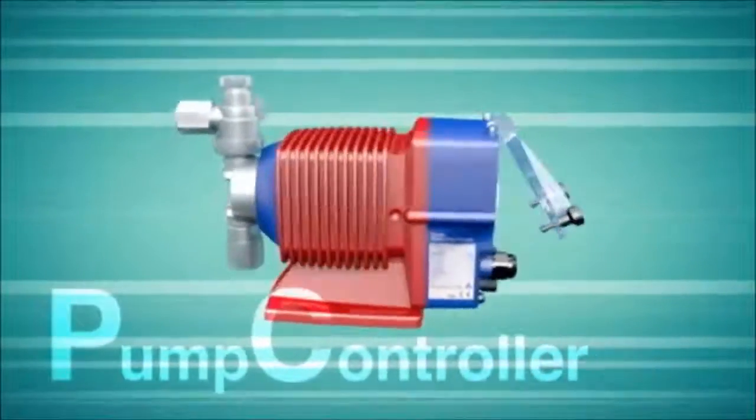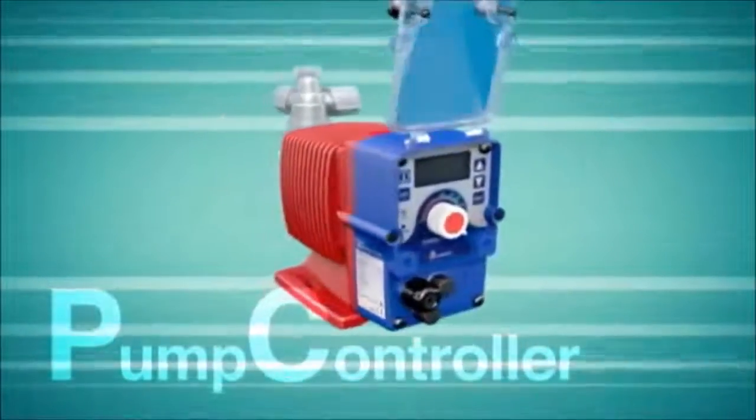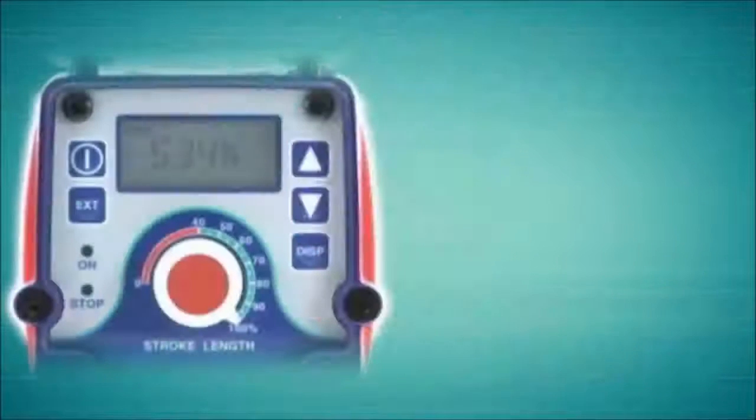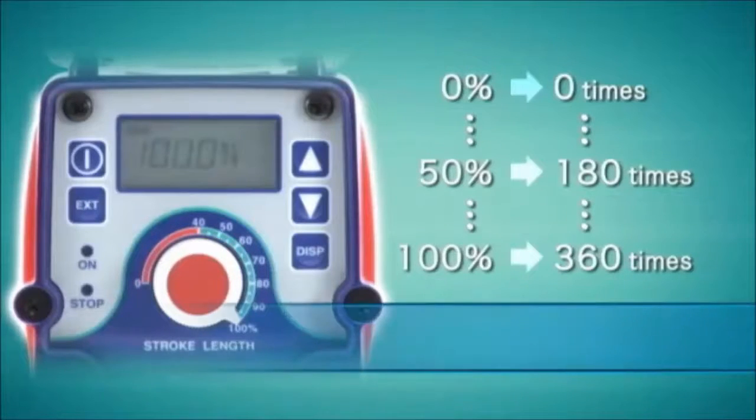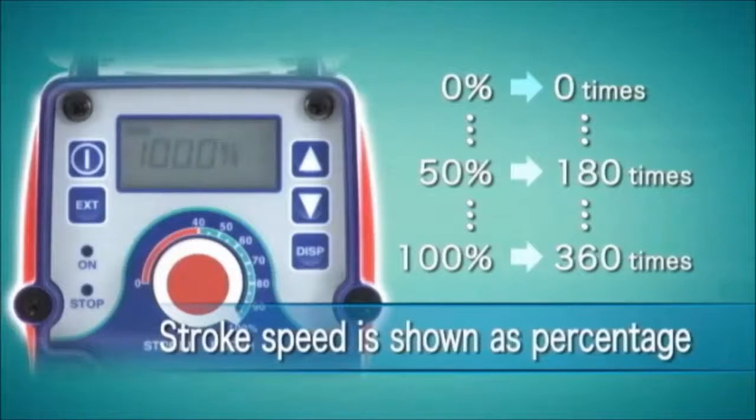The pump controller utilizes several control methods for output control. Manual control is achieved through stroke length adjustment or pump speed adjustment, or a combination of both. Stroke rate is displayed as a percentage of full speed or one of several flow rate units.